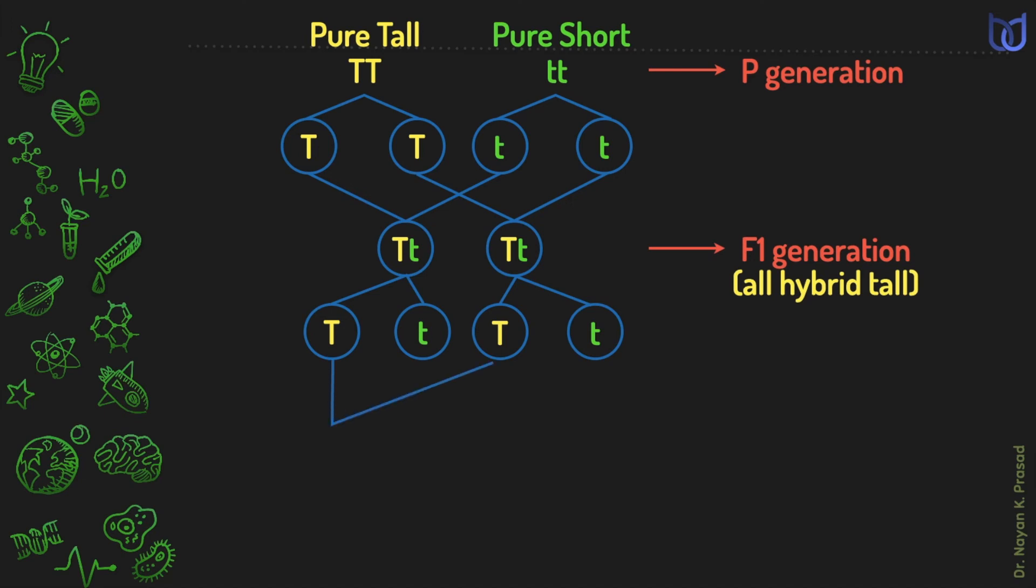Capital T may combine with capital T of other side, forming capital T, capital T together and this will result into a pure tall plant. Capital T may combine with small t and this will result in the development of impure tall plant. Similarly, when a small t combines with capital T of other side, then this time again, capital T and small t together, so it will result into an impure plant.